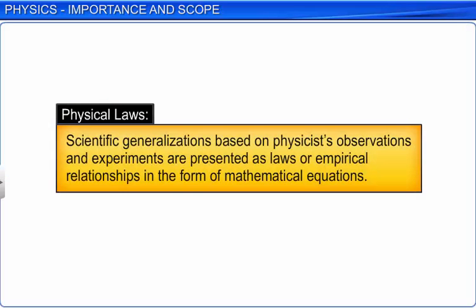Apart from finding the facts through observation and experiments, physicists always try to summarize these facts as laws or empirical relations in form of mathematical equations. These are known as physical laws.